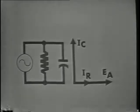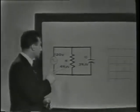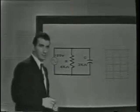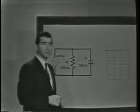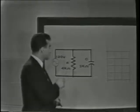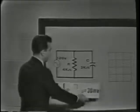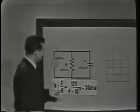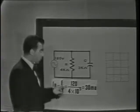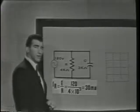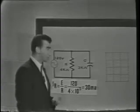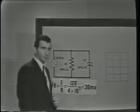Since we're concerned with parallel RC circuits in this lesson, let's examine a circuit with given component values. We'll calculate the branch currents and plot this information vectorally on our graph. The current through each branch can be easily determined by simply applying Ohm's law. IR may be found by dividing the resistance into the voltage: 120 volts over 4k ohms gives us 30 milliamps through the resistive leg of the circuit.